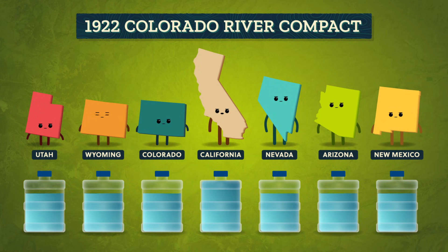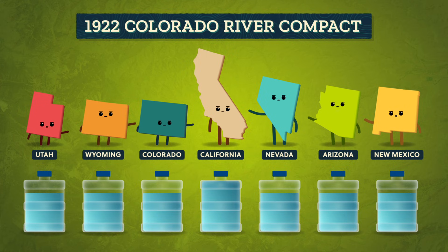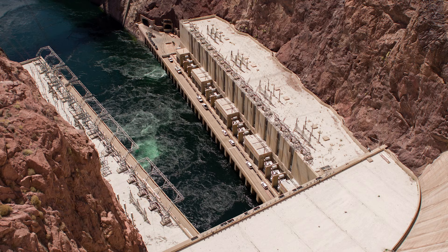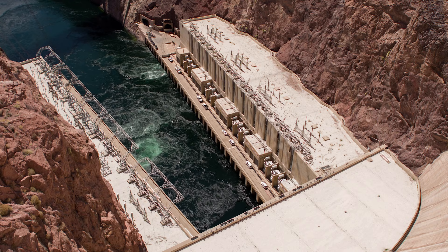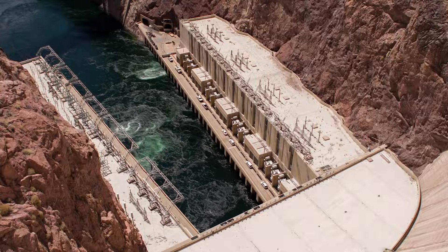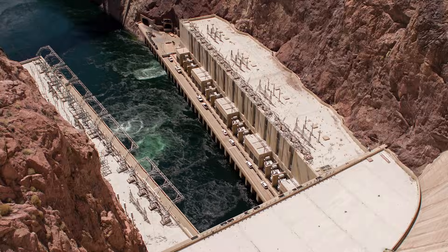California is a downstream user, but also a very powerful state, and for decades was using more water than it was allocated. So in 2003, after threats that their water would be cut off, California agreed to reduce its use of the Colorado River water over the next 14 years to allow upstream states their share. The other big problem was that the river's natural flow had to be physically moved to suit certain human wants and needs, which made things even less fair.